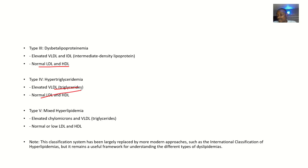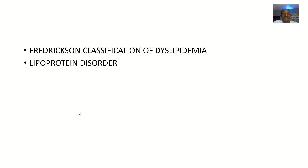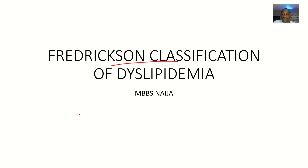Type 4 is hypertriglyceridemia, where there are elevated triglycerides but normal low-density lipoproteins and normal high-density lipoproteins. Then Type 5 is mixed hyperlipidemia, where you're having high levels of both chylomicrons and very low-density lipoproteins — all of them are elevated. That's it for the Fredrickson classification of dyslipidemias.